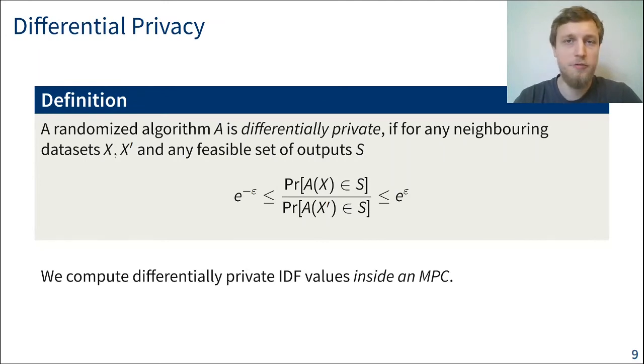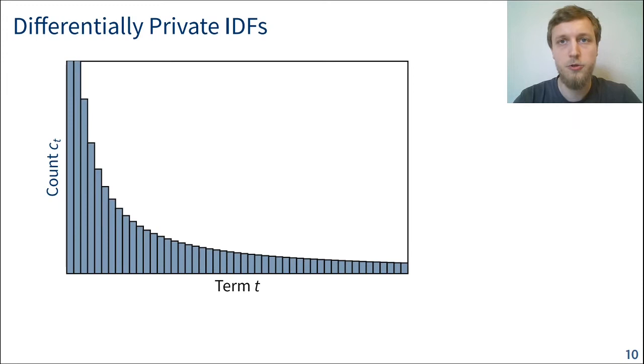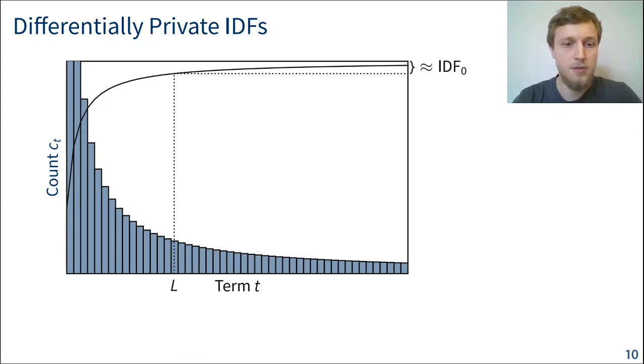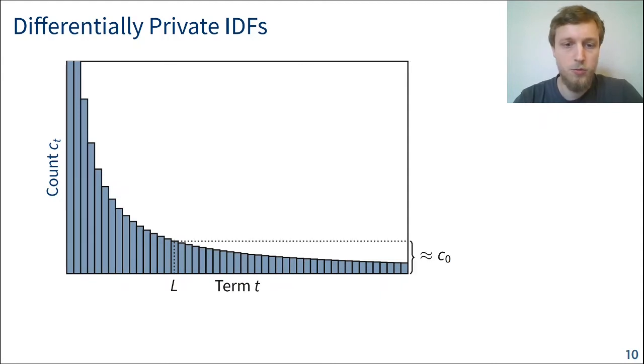Now we could use a general differential privacy mechanism such as the Laplace mechanism and apply it to that problem. The problem with this generic approach again is that the noise scales with the number of values you want to reveal. And since the number of IDF values you want to reveal is equal to the size of the vocabulary, that is quite a lot of values, so those will be very noisy and not very useful in practice. Instead, what we're going to do is look at the distribution of words in naturally occurring texts. So these usually follow a power law distribution, which implies that they have very few very common words and also very many not that common words. If we look at the corresponding IDF values to this distribution, we'll see that it quickly converges to a maximum value that we just want to call IDF zero here. And so that means after looking at the first L terms, we can assign all the other terms that are less common than the first L, a default IDF value, which corresponds to a default count.